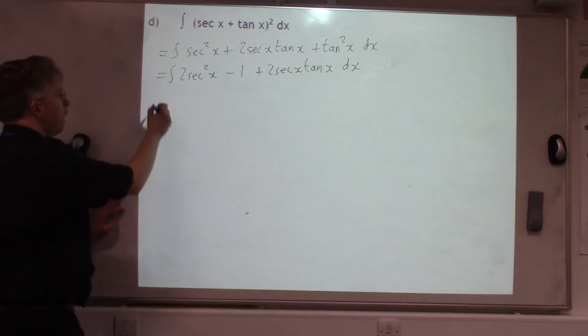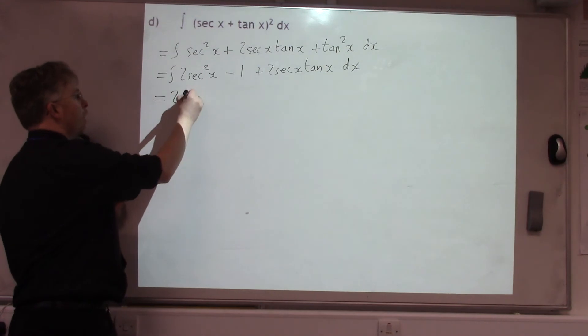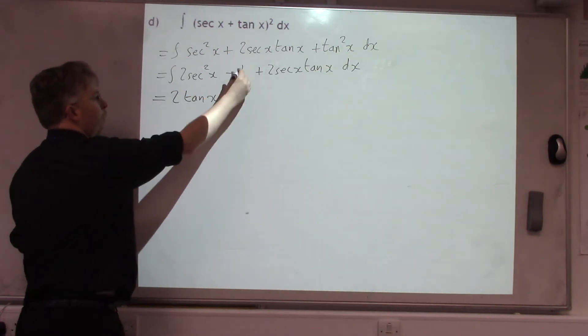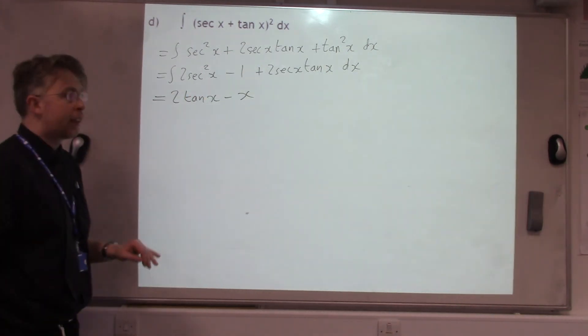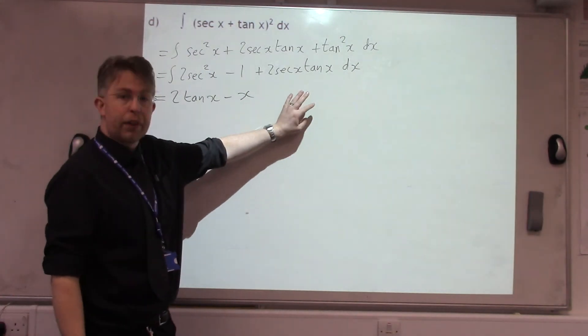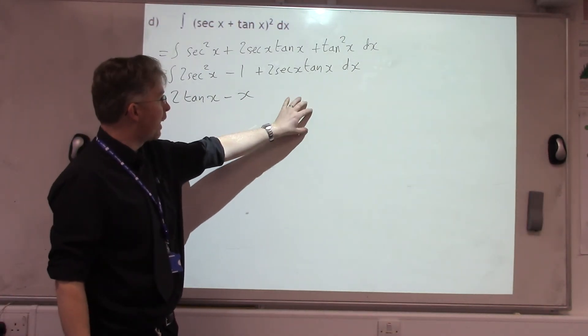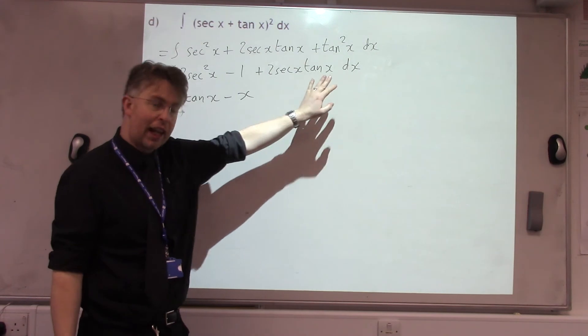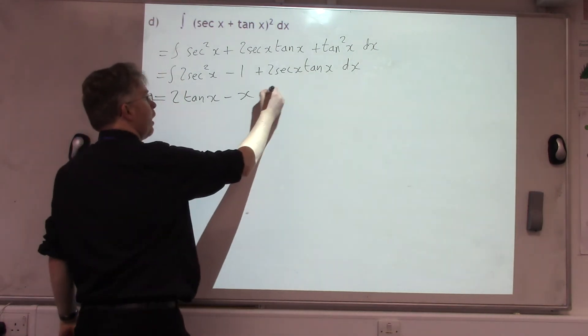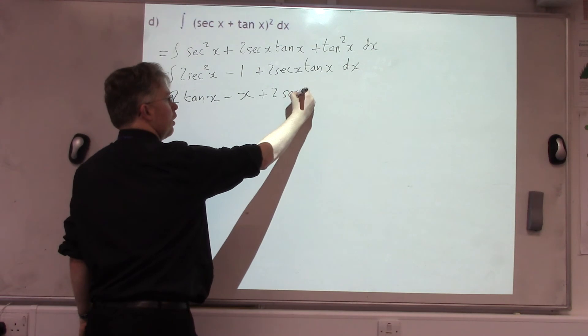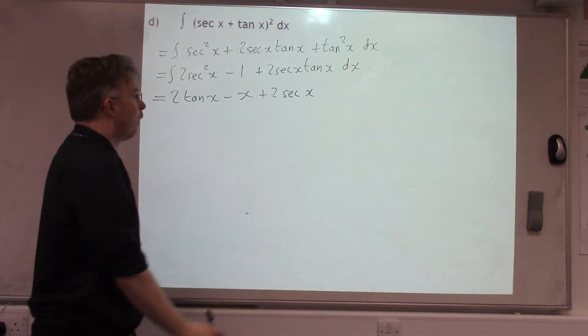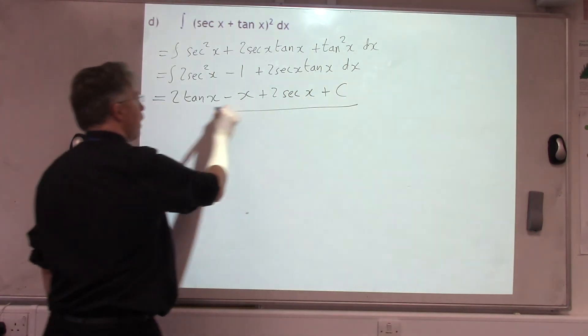Integrated term by term, sec squared integrates to tan, so we get tan x, plus 2 sec x tan x. And, from the C3 formulae booklet, we know that sec x differentiates to sec x tan x, so go the other way. So, 2 sec x tan x will integrate to 2 sec x. And don't forget plus c.